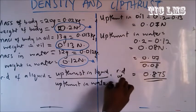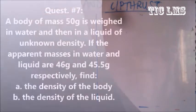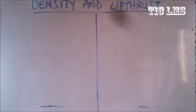Relative density of oil equals upthrust in oil over upthrust in water, which is 0.07 divided by 0.08, giving 0.875 as the relative density of the oil.